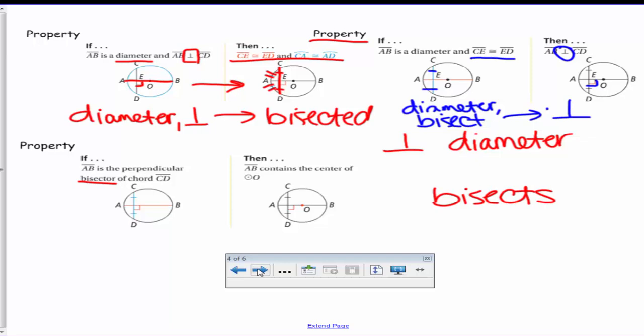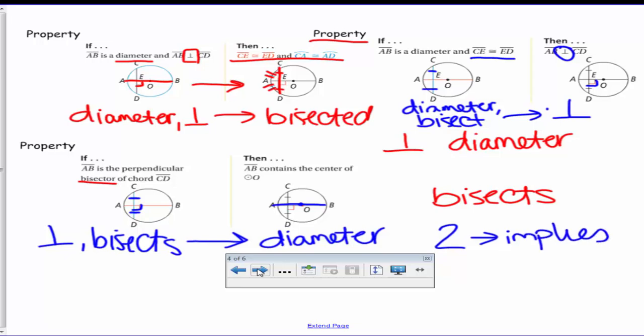Last one says that AB is the perpendicular bisector. So now we have perpendicular and bisects, so then hopefully you can see the pattern. Since we have perpendicular bisects, then we have diameter. That means it's going through the center. So if you notice, any two of these implies the third. You have to have two of those words to then say that third holds true.